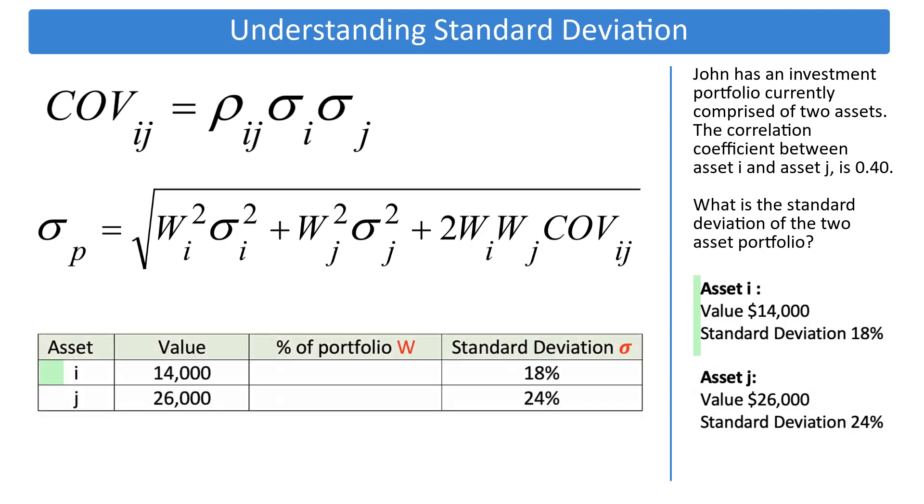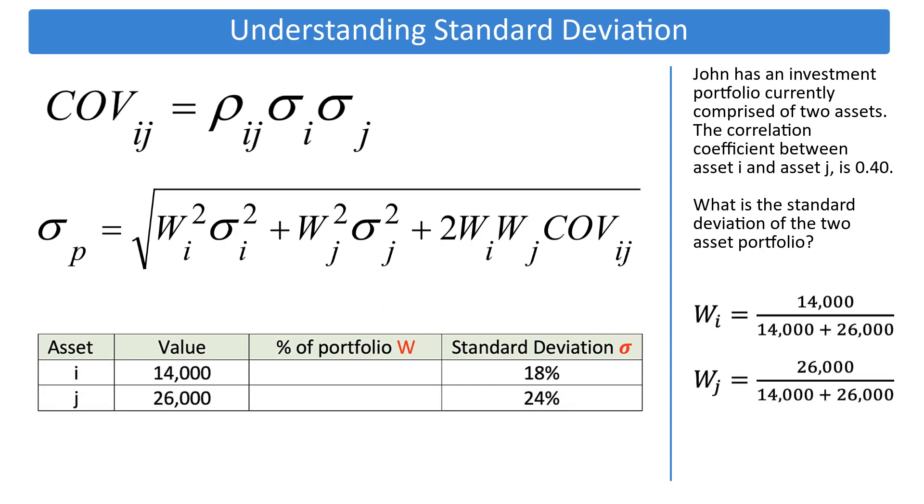It's helpful to organize this information into a table. An important variable, percentage of portfolio, will be labeled as capital W. To calculate the percentage, add both of their values and use that sum to divide each asset. Asset I is 35%, and asset J is 65%.